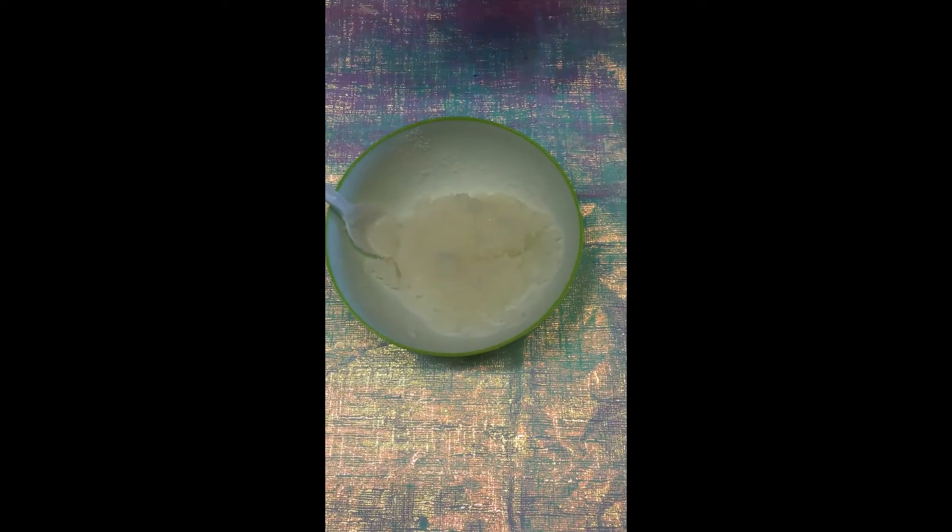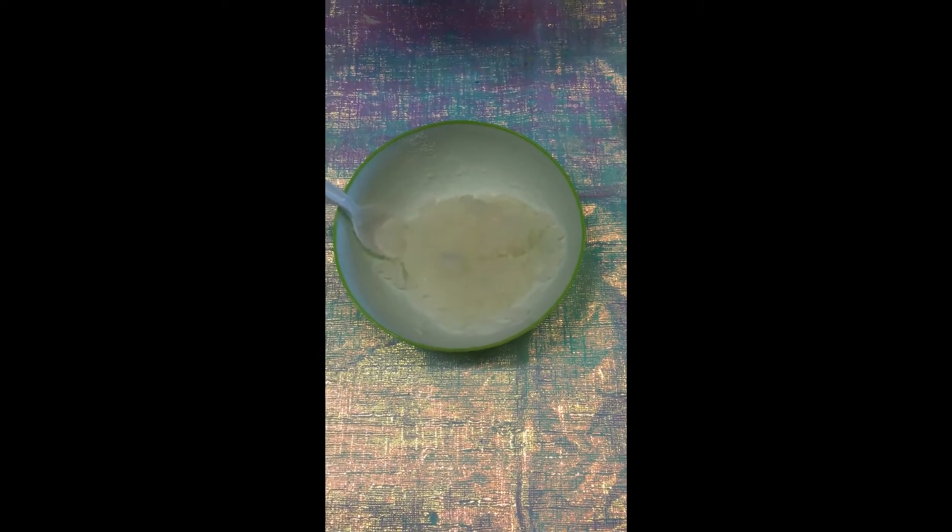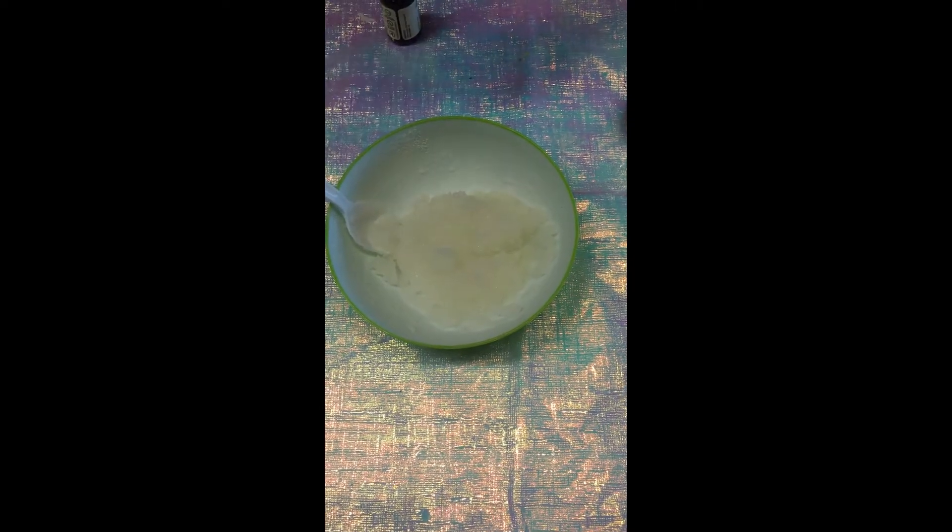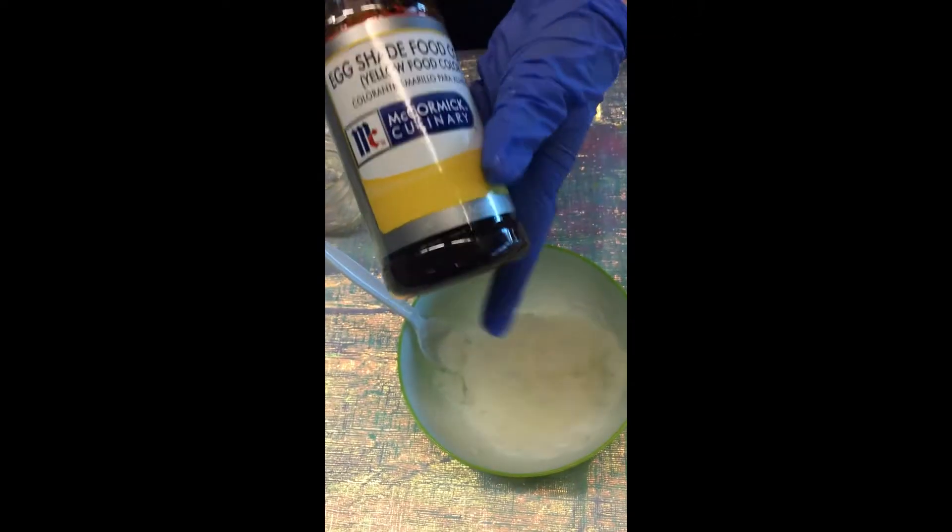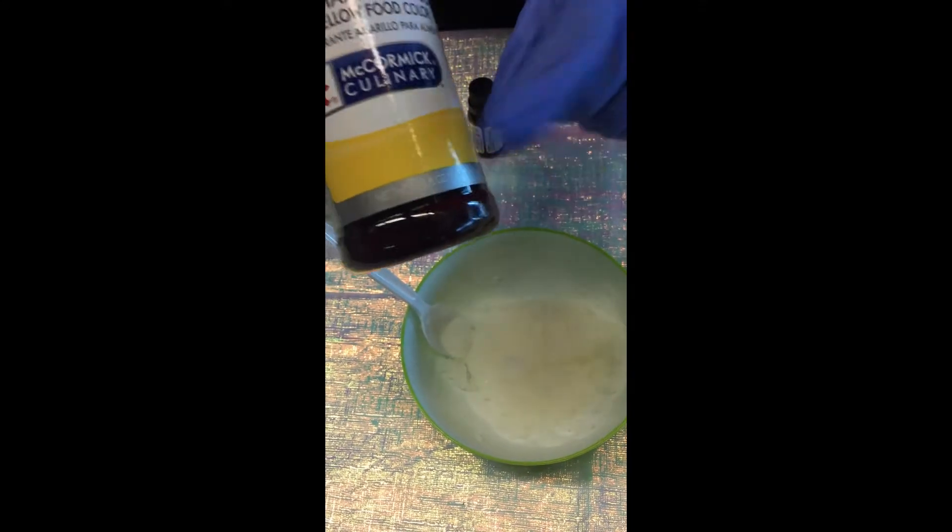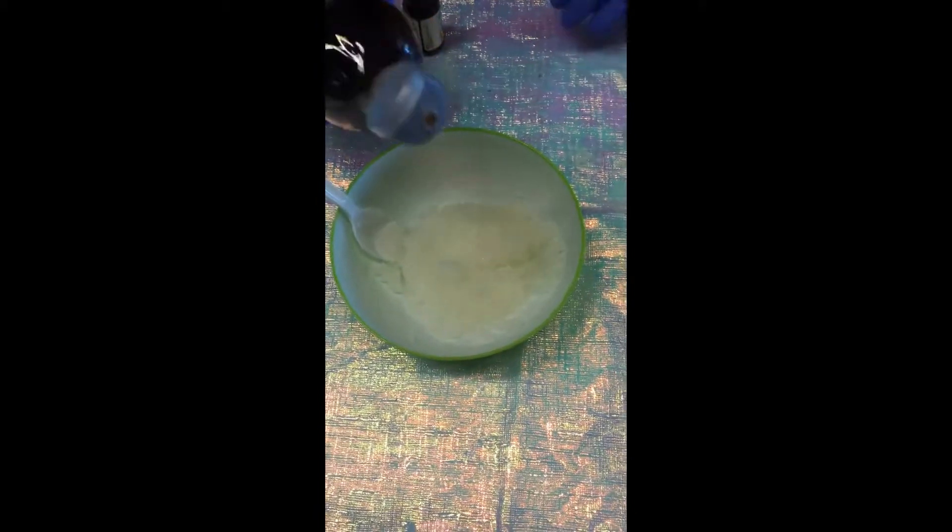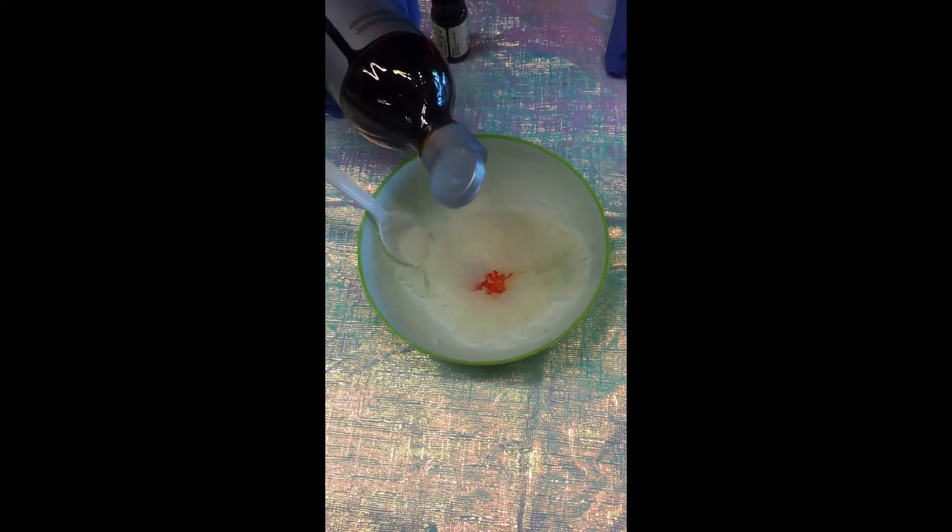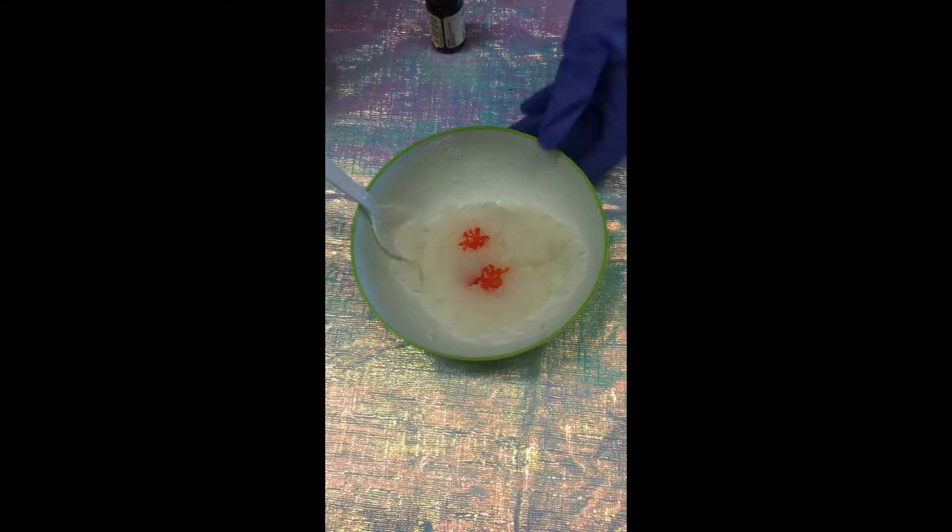Next this is an optional step, but we are going to be using a yellow food coloring. It looks a little bit red in this bottle but it's going to turn out to be a pretty summer yellow and you can use as much or as little food coloring as you would like. I'm going to start with a couple of drops.